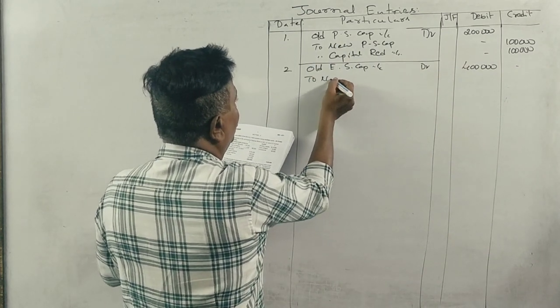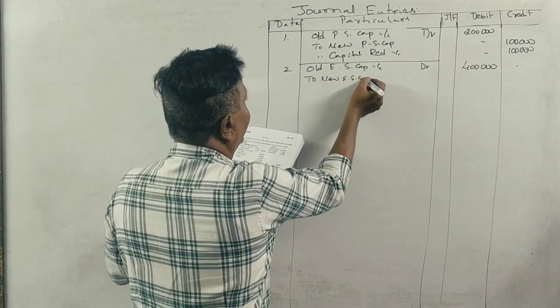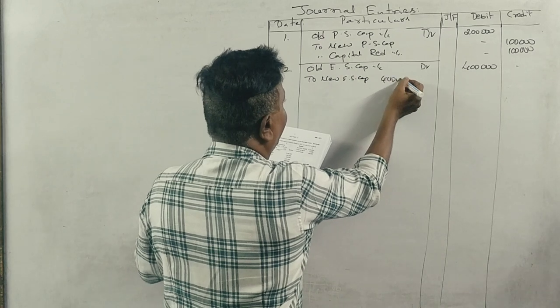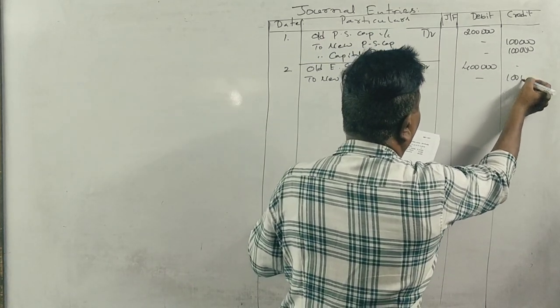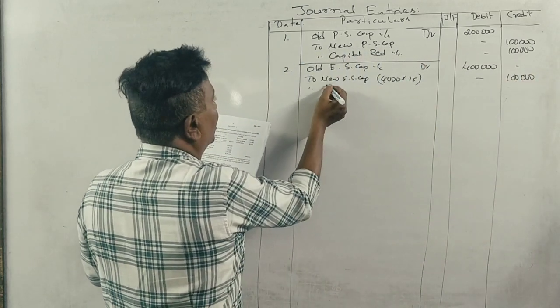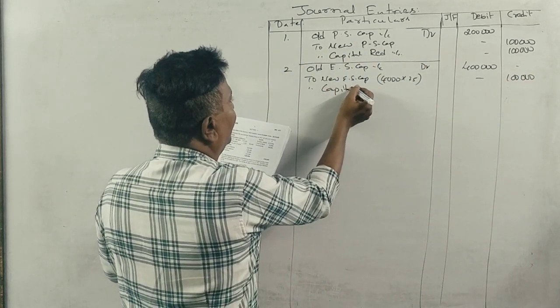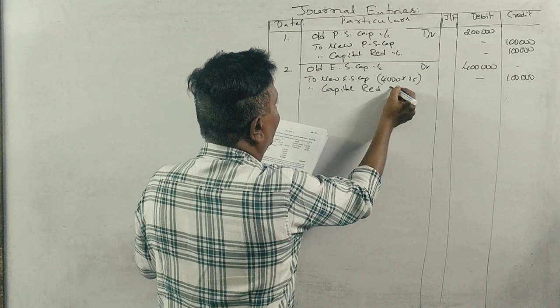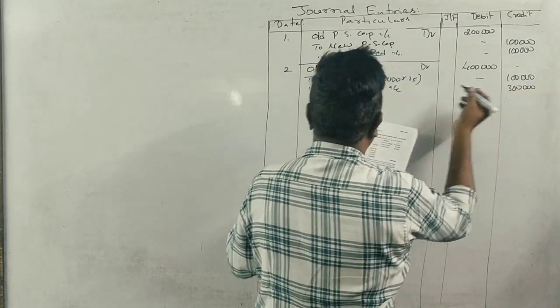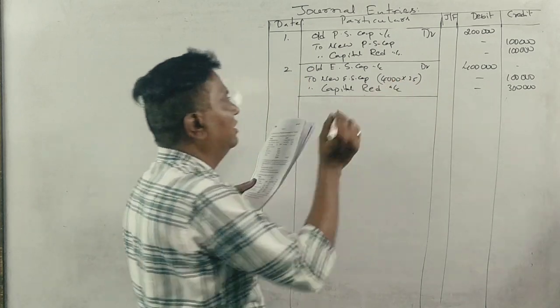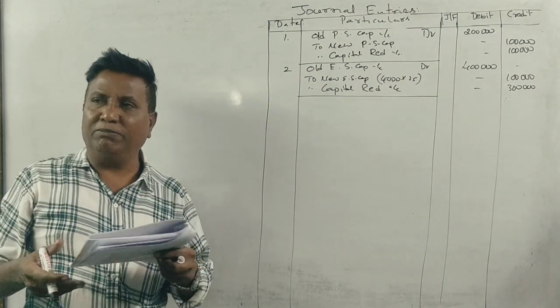Credit to new equity share capital account - 4,000 shares into 25 equals 1 lakh. Capital reduction account gets 1 lakh. The narration is: being equity share capital reduced.